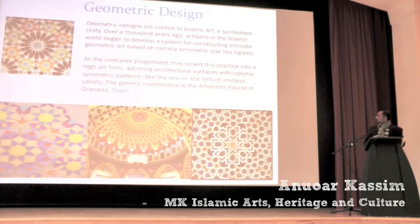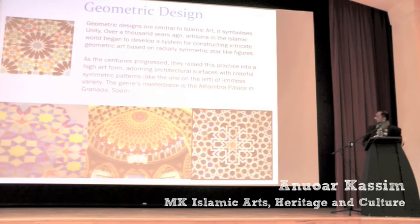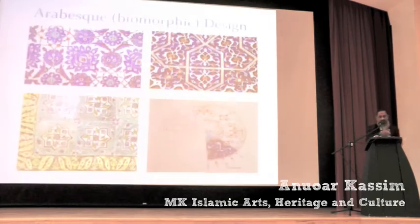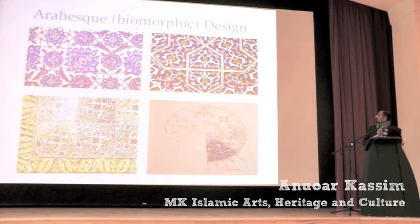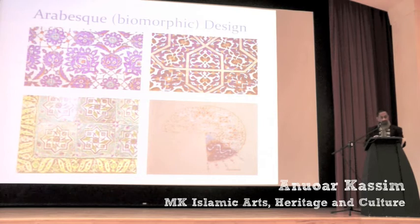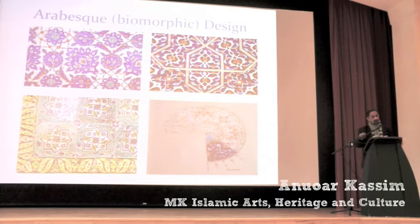We do have those workshops and we discuss with students. The system of constructing intricate geometric art is based on radical systematic style and art figures. There are science elements that we bring across in education in schools. As centuries progressed, this developed into a high art form applied to architectural surfaces with colourful systematic design. As you can see, there are some examples. A masterpiece can be found in the Alhambra Palace in Granada, Spain. Some of the other arabesque biomorphic designs bring nature — the flowers — into tiles. These are some of the designs we've incorporated in our workshops, seminars and festivals.